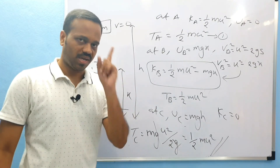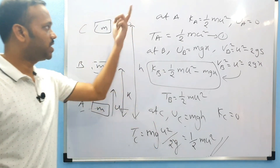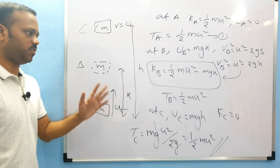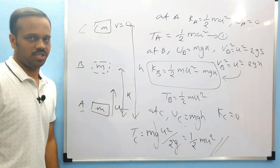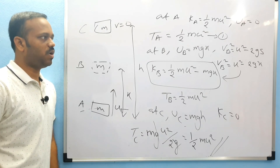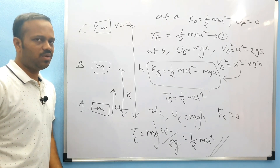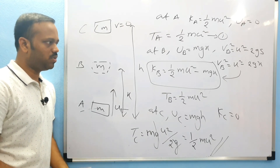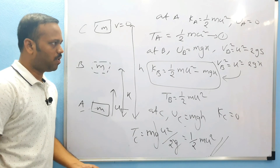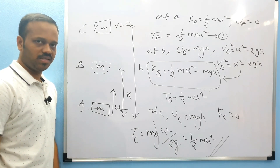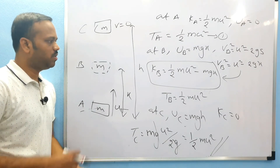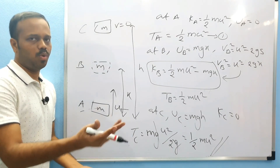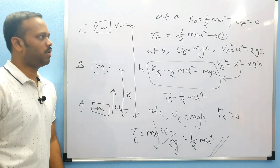All the total energies at all points are the same, so mechanical energy is conserved. Mechanical energy is constant in the case of a vertically projected body. You can do it easily just by using kinetic energy formulas and mechanical energy formulas and conveniently working through the algebra.